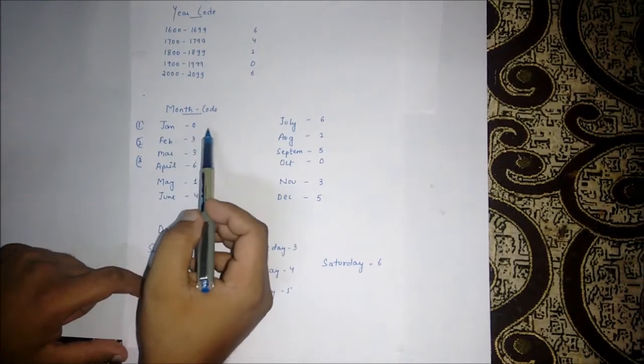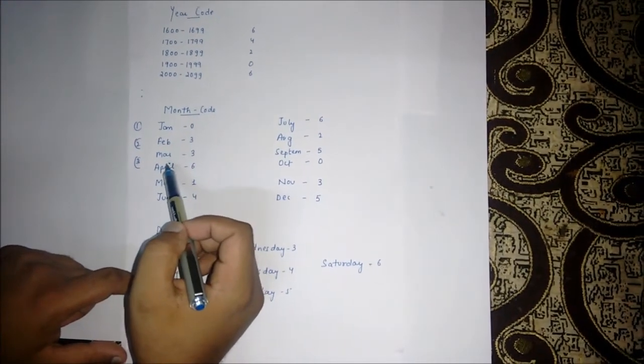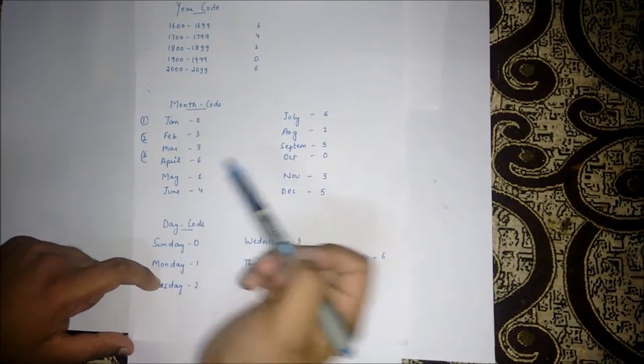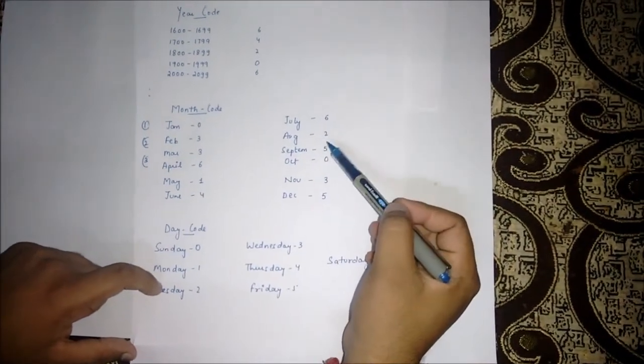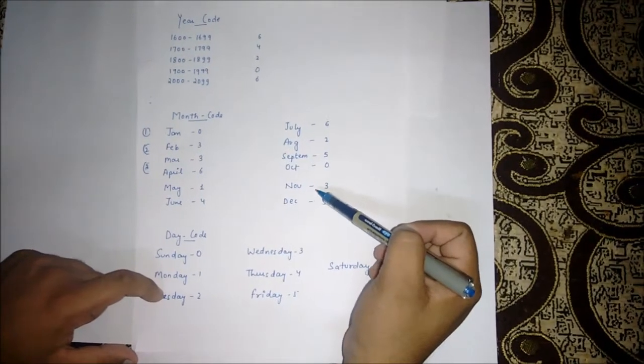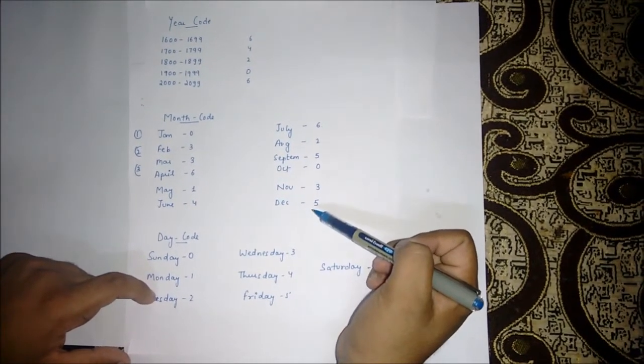For month codes: January is 2, February is 3, March is 3, April is 6, May is 1, June is 4, July is 6, August is 2, September is 5, October is 0, November is 3, and December is 5.